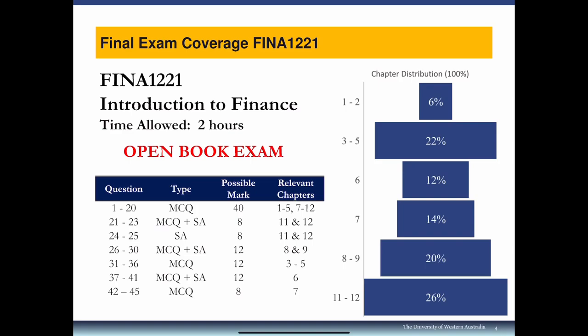Open book means you don't need to memorize formulas or particular structures. When a question asks you to calculate, say, the present value of an annuity, you can refer back to your lecture slides for the formula. We have 45 questions total: 40 multiple choice questions and 5 short answer questions.